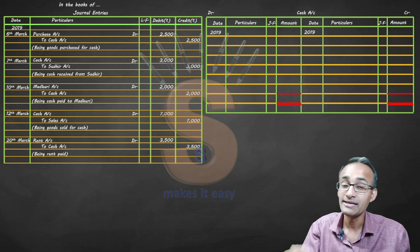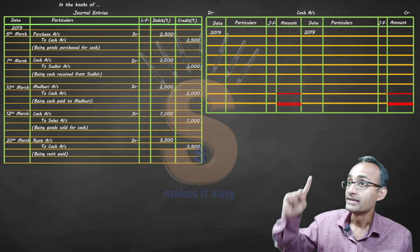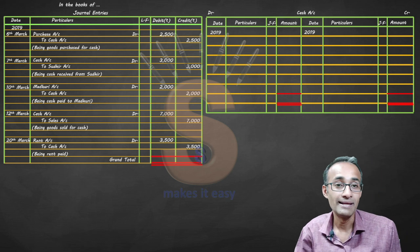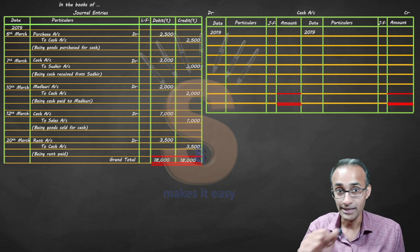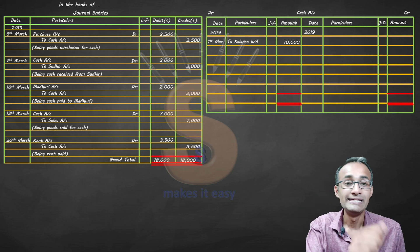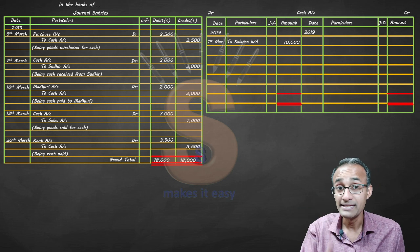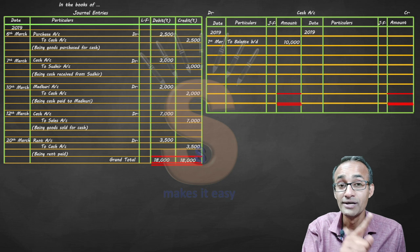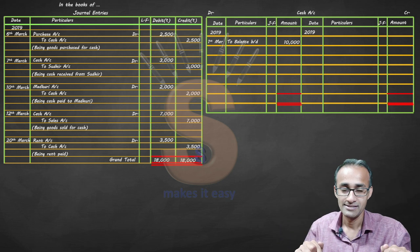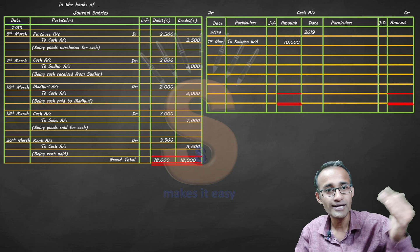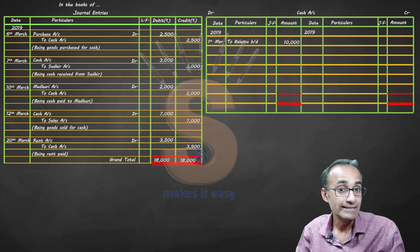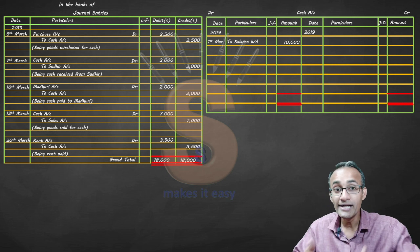Now before posting, on the cash account debit side you need your opening balance. Balance brought down: 10,000, 1st — that is the opening balance. The first day's balance is the opening balance; the last day's balance is the closing balance. Once you have written and recorded that, you go ahead with posting.